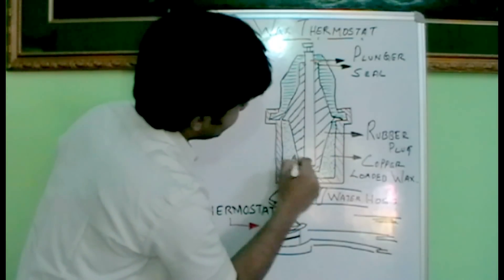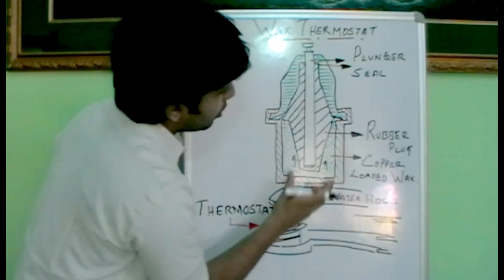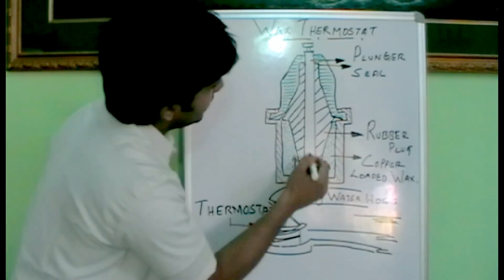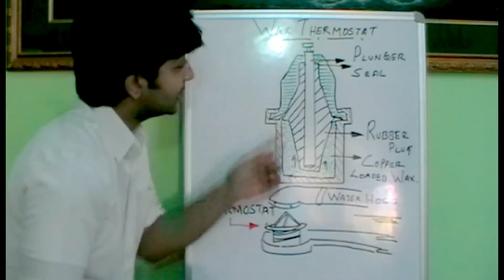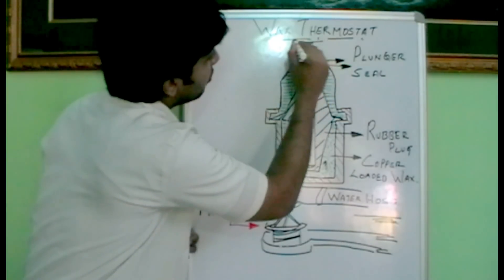That means this expands and exerts pressure here towards the rubber plug. It contracts towards the rubber plug and results in the plunger moving up, causing this plunger to actuate the valve on the top.